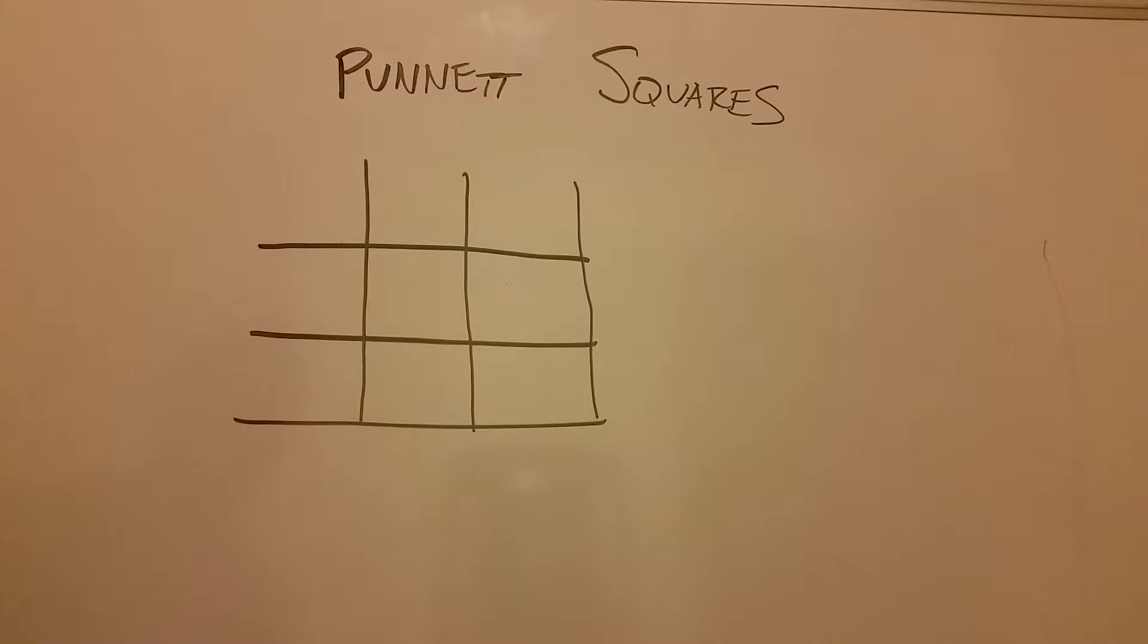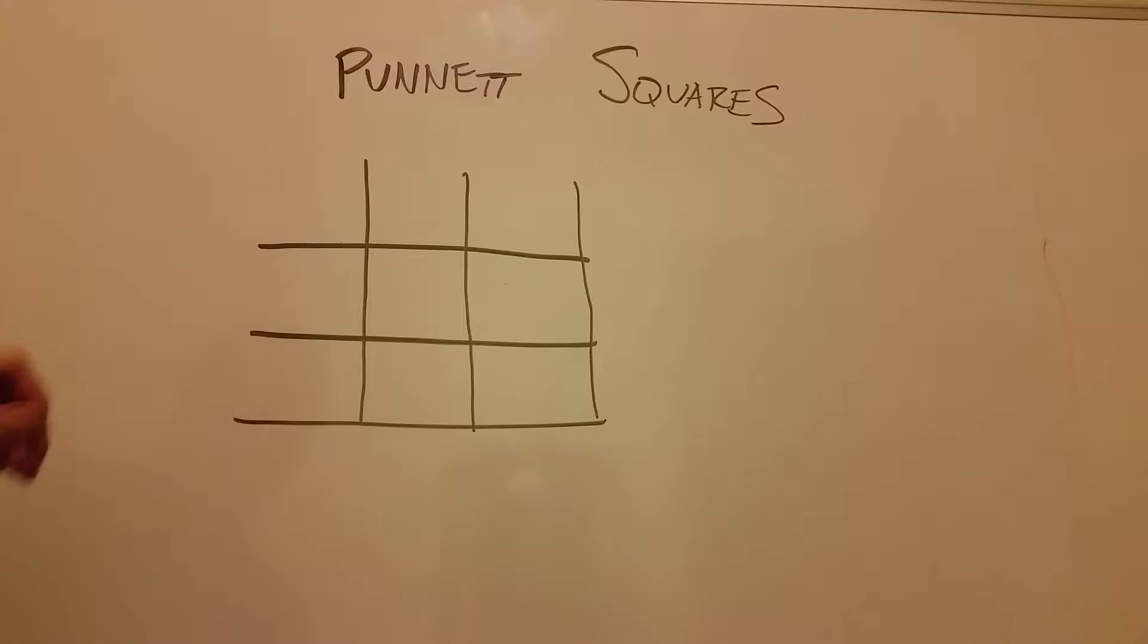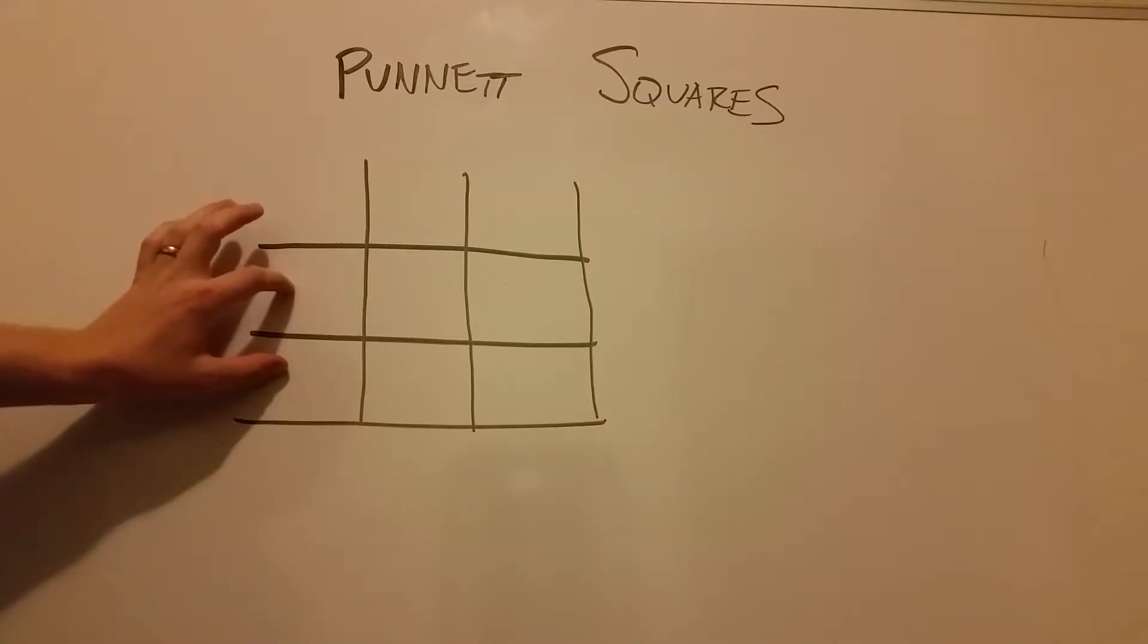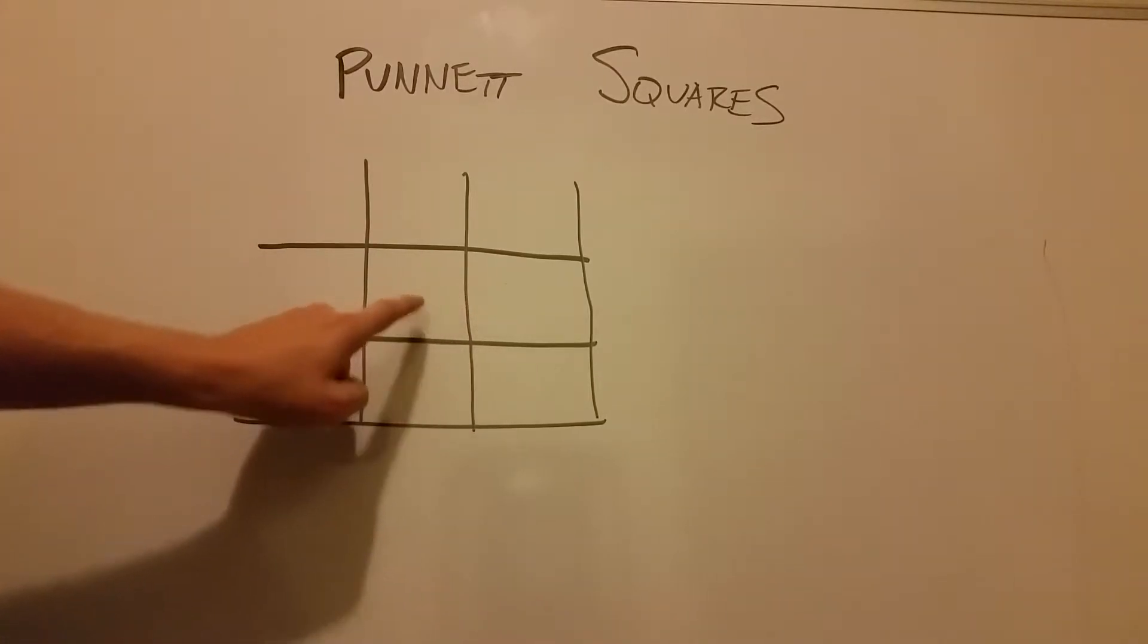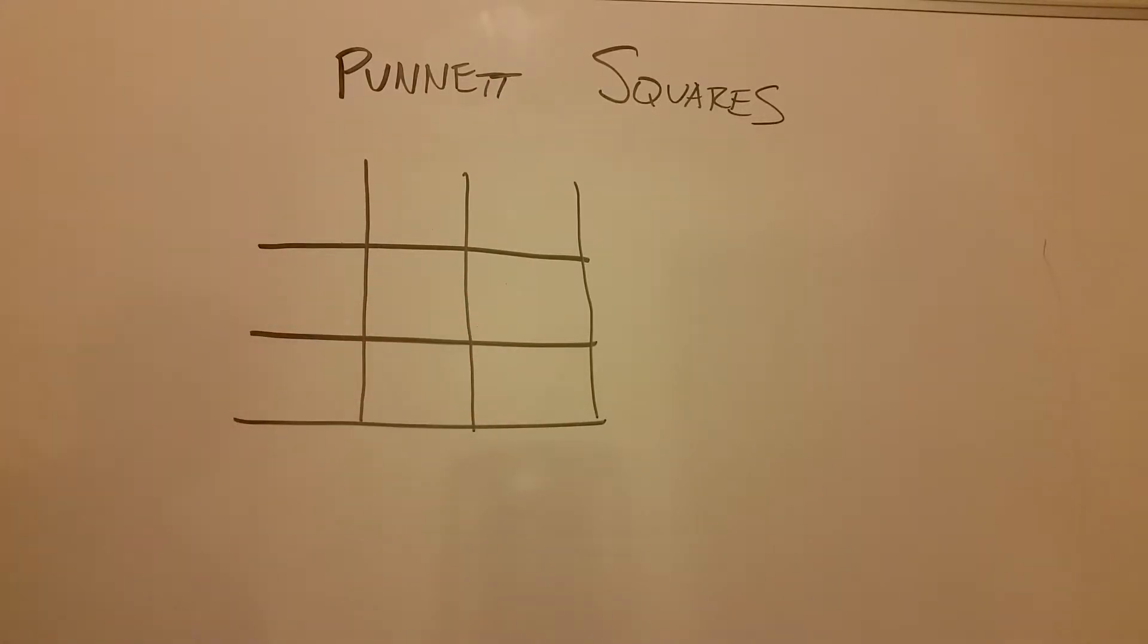Punnett squares essentially combine one parent, which is denoted by these two squares, with another parent, which is denoted by these two squares, into a singular organism and what the possible outcomes are for that organism. The possible outcomes are going to be listed here in these four boxes, and you'll see what I'm talking about in a little bit.